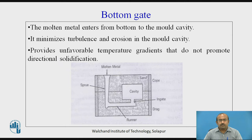The second type is the bottom gate. The molten metal enters from the bottom into the mold cavity, as clarified by the figure on the screen. The molten metal runs through the sprue, then the runner, then the ingate, and enters the cavity. The elements shown in the figure are: sand, sprue, cavity, runner, ingate, cope half, and drag half. Bottom gating minimizes turbulence and erosion in the mold cavity, but provides an unfavorable temperature gradient that does not promote directional solidification.